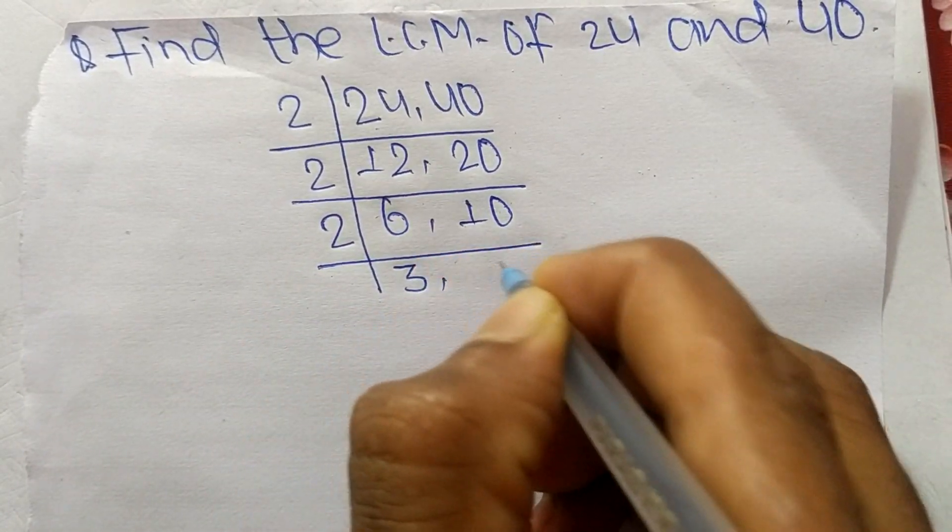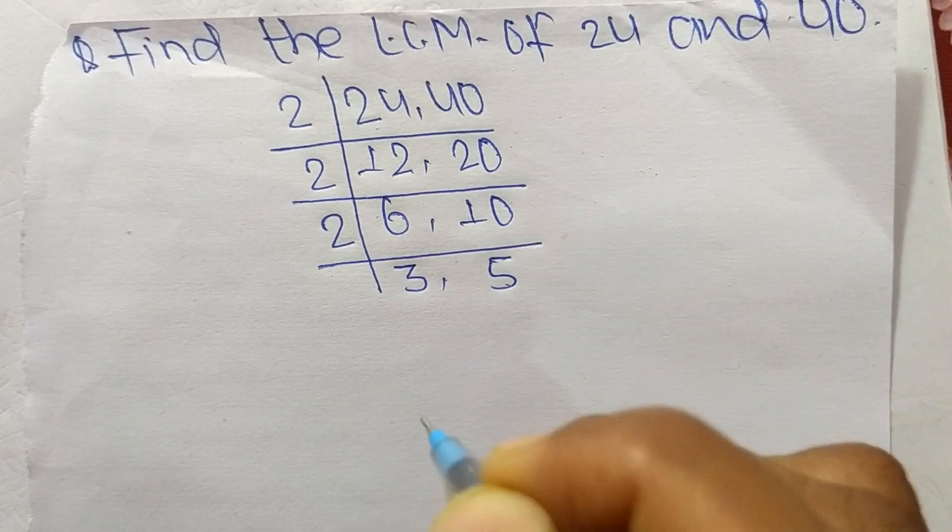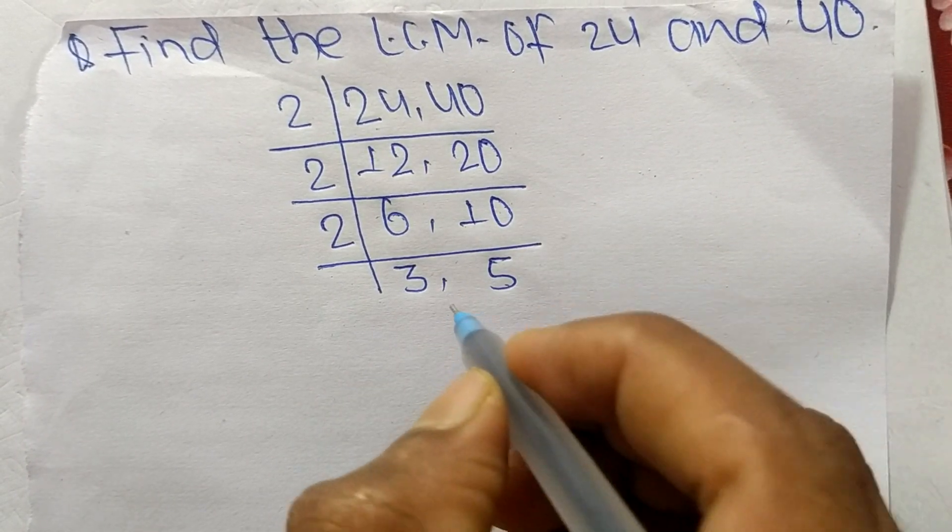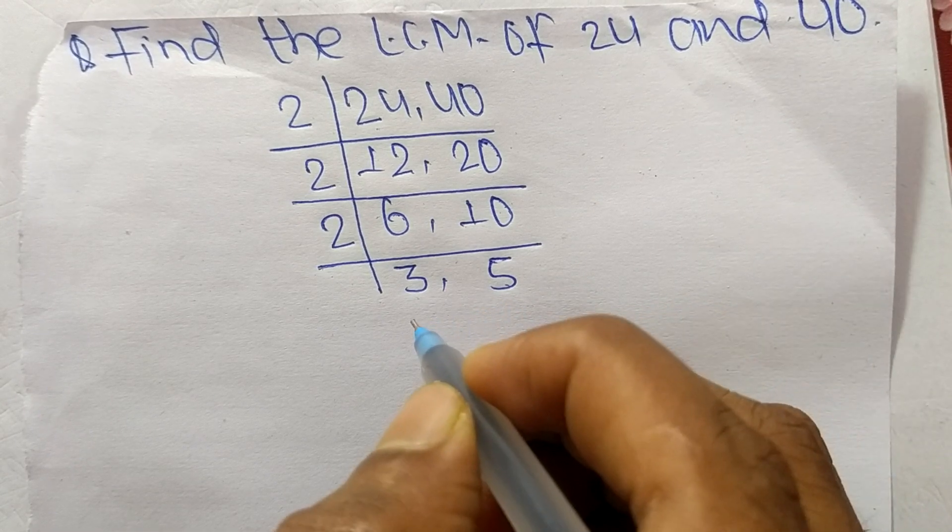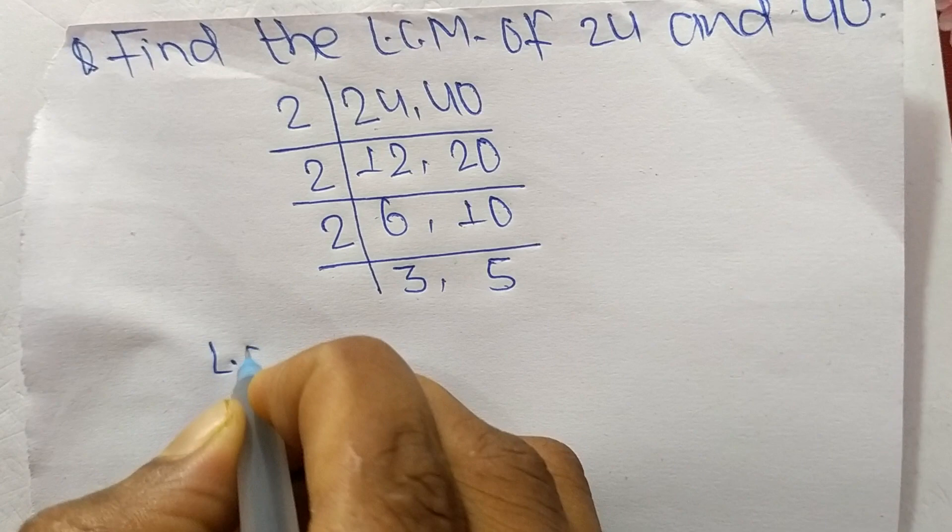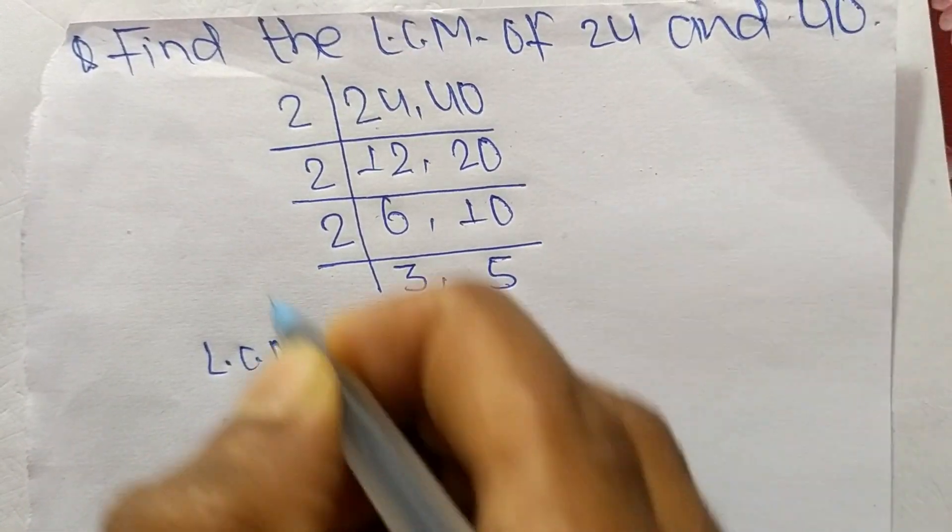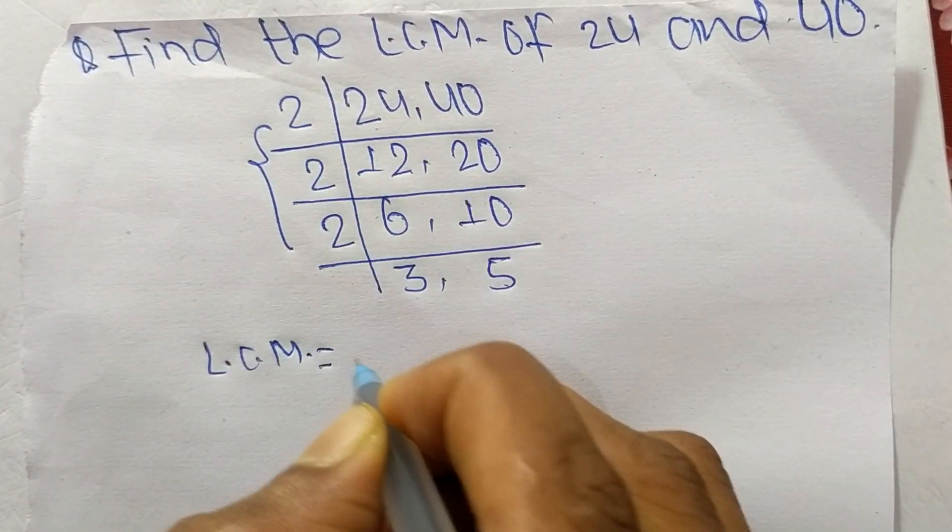Again it is divisible by 2, so 2 times 3 means 6 and 2 times 5 means 10. At last we have 3 and 5 which is not exactly divisible by the same number.